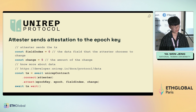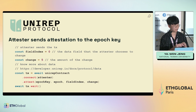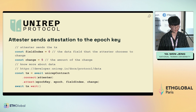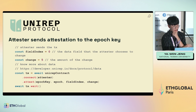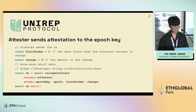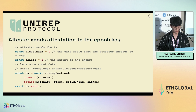When the attester sees an epoch key, they can send data or attestation to it. In this example, the attester sends data index zero to five. We provide, for example, six data fields — you can change any of the six. If we define field index zero as GitHub stars and it increases by five, you give index zero a value of five. You can go to the documentation to see how data is defined.